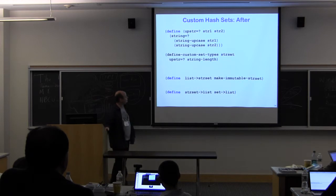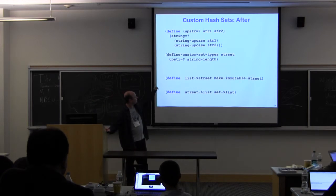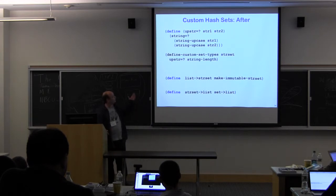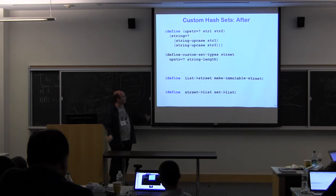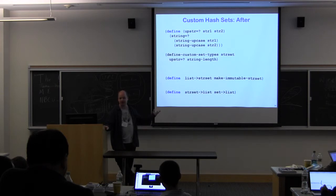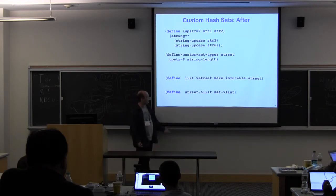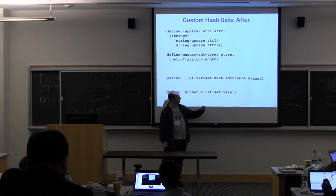Well, so now with generic sets, we have something called define-custom-set-types. You just define your comparison and/or your hashing function. Here for hash functions I just use string-length, you can use anything you want. So you say define-custom-set-types, and you name your set type here, it's str-set. And then you name your comparison and your hash function, and you get a bunch of names out of that.